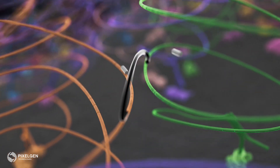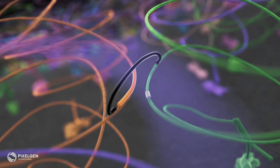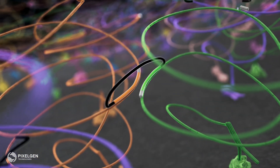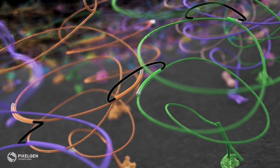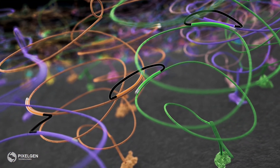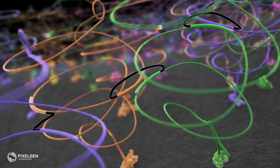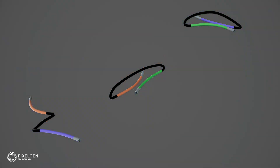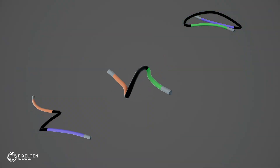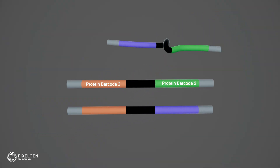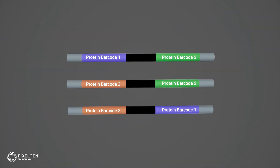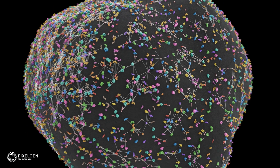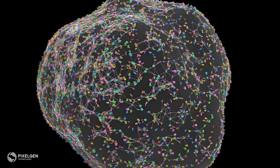Next, linker oligos and enzymes are added, and a gap-fill ligation reaction creates a DNA fragment containing barcodes for proteins in nanoscale proximity, forming a network encompassing each single cell.